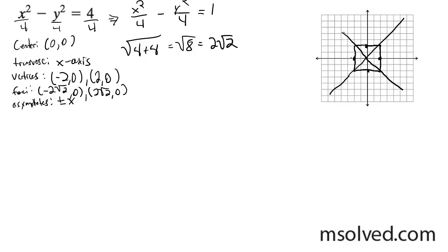The foci can be located - 2 root 2 is approximately 2.82. Let's plot it right here.